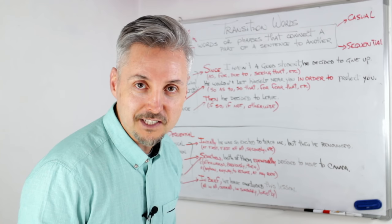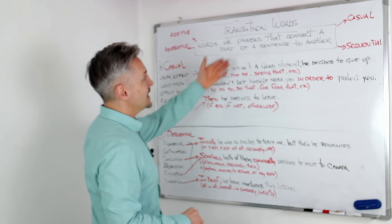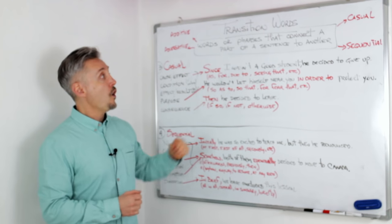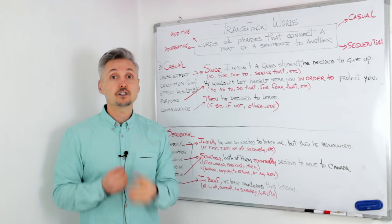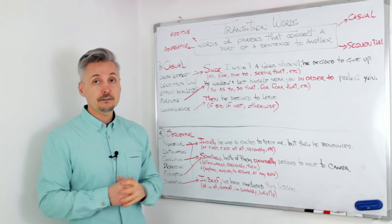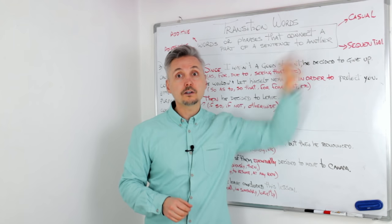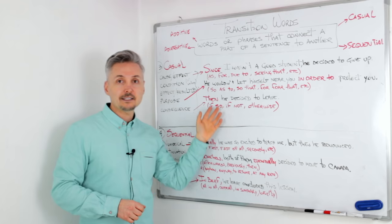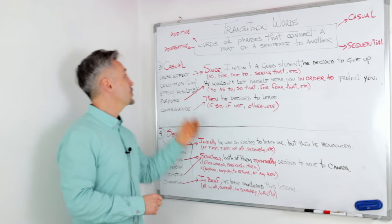Are you ready for the second part? Great! Transition words are words or phrases that connect part of a sentence to another. They can be additive, adversative, causal, or sequential. In this part, we're going to look at causal and sequential.